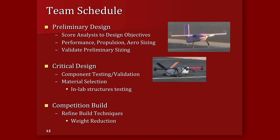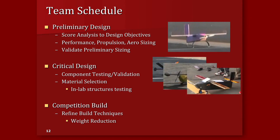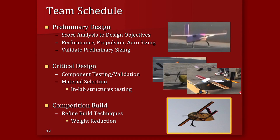Next we move to our critical design phase, where we look specifically at each component, the materials, and how it's all integrated to come up with a more refined design. For example, we evaluate different tail configurations and fuselage materials — going from a V-tail with a fiberglass fuselage, to a V-tail with Kevlar, and then to a conventional tail with a carbon fuselage. Our last cycle is the competition build phase, where we refine build techniques to make the aircraft as lightweight as possible and competition-ready, finishing with our aircraft that we compete with in mid-April.